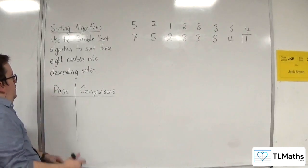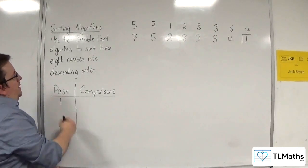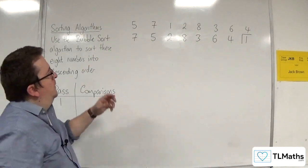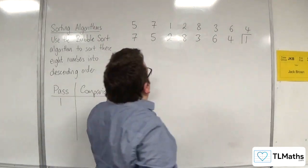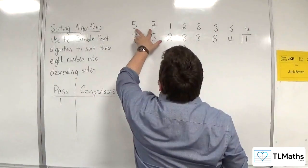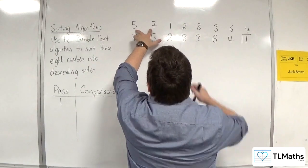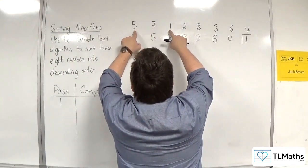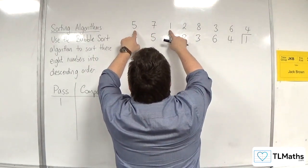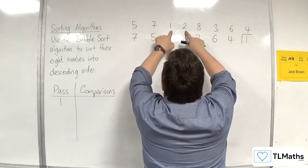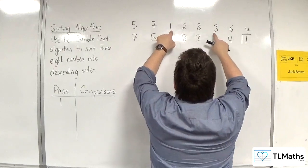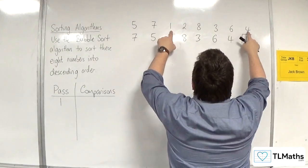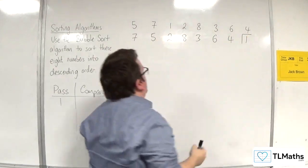So in our first pass, we made one, then two, then three, four, five, six, seven comparisons.